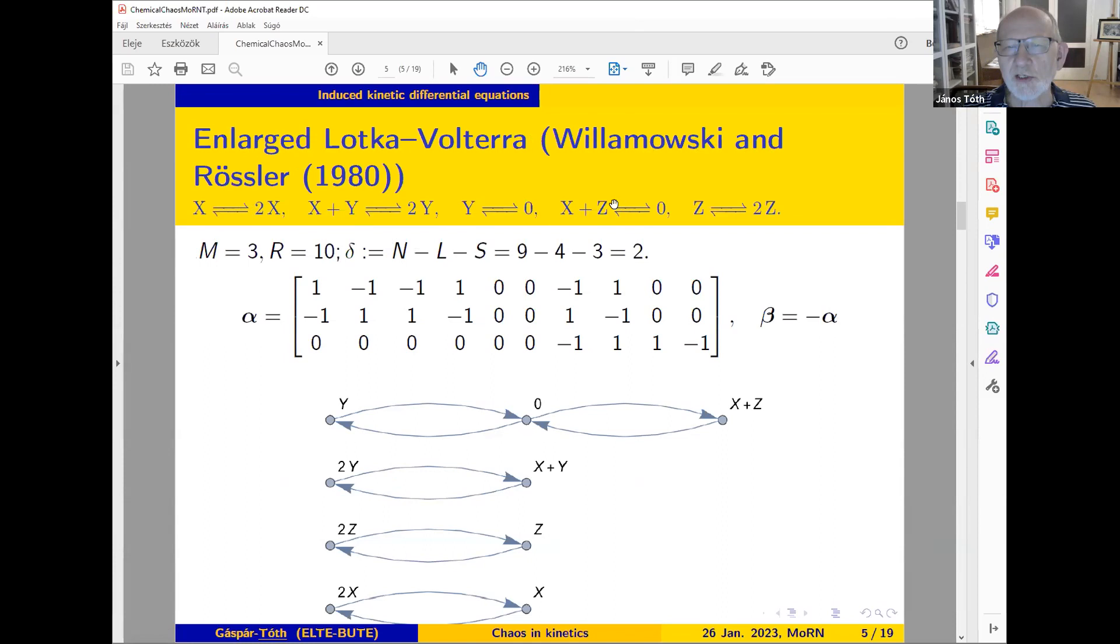The first three steps are exactly those in the reversible Lotka-Volterra system, and two more reactions are added. The number of species is three, number of reaction steps is ten—all steps are reversible, so five times two. We also calculate a quantity which turned out to be very useful in some investigations.